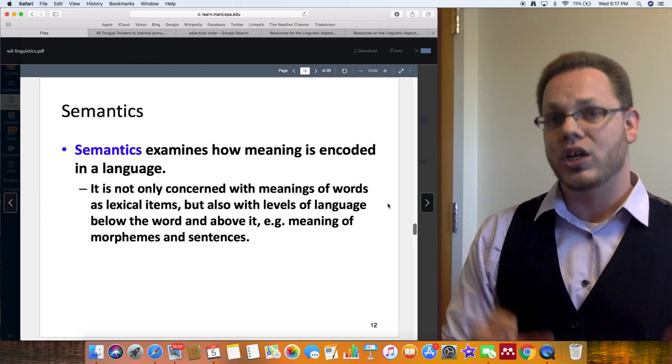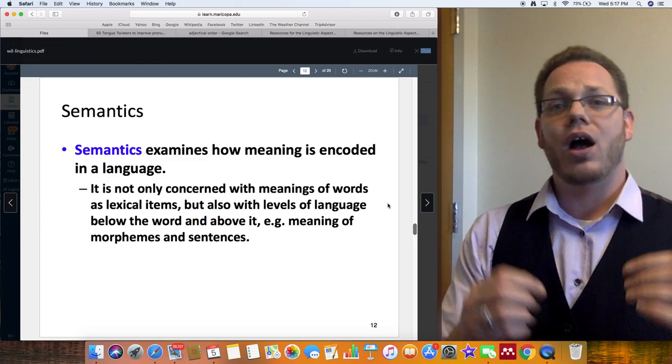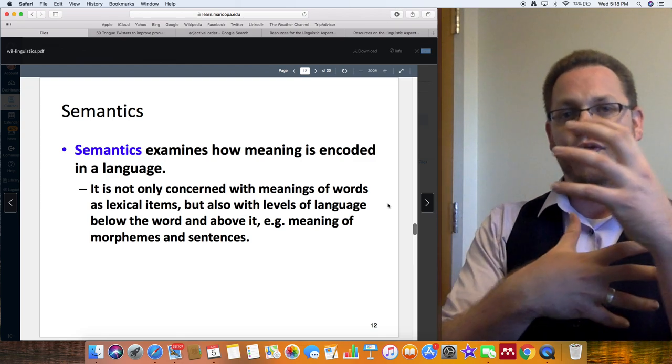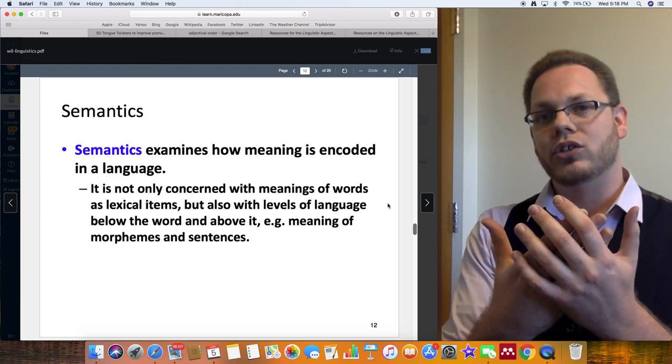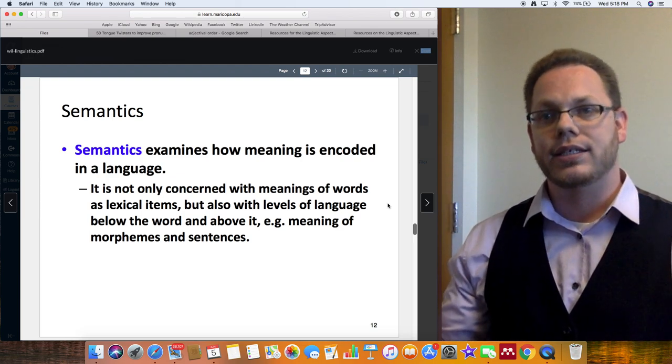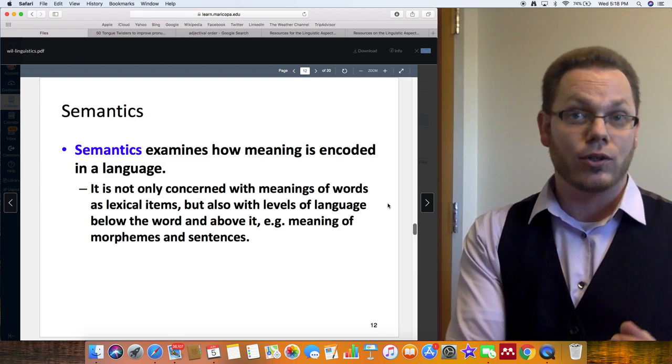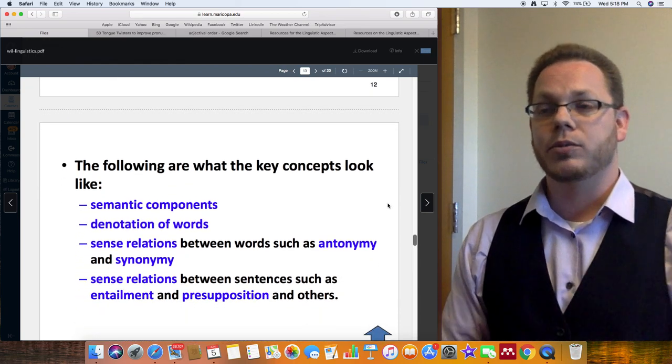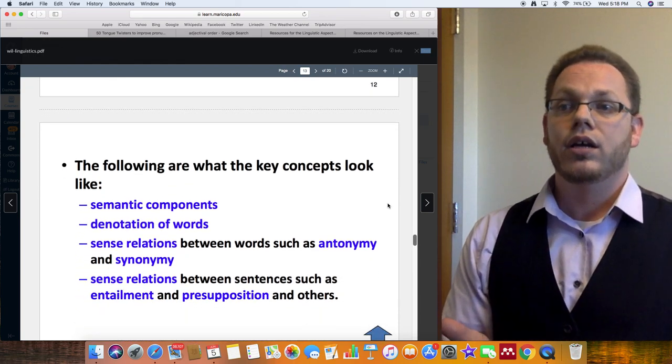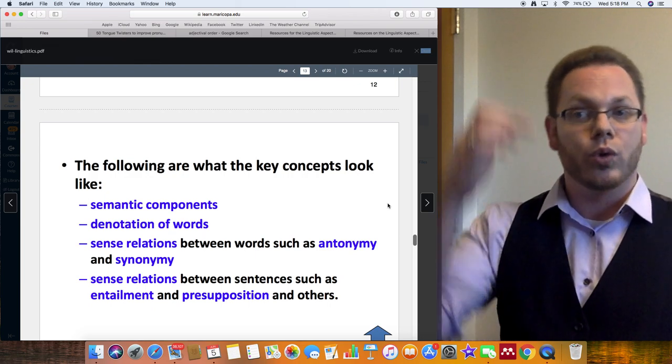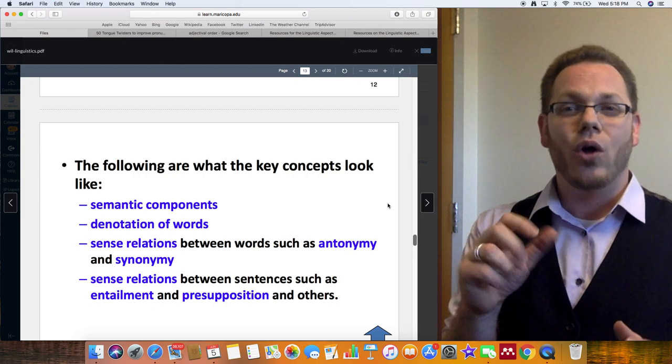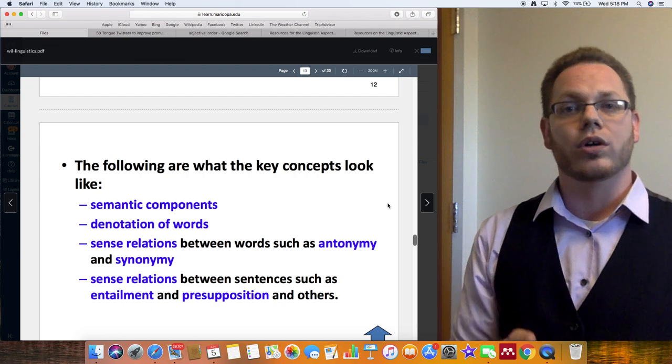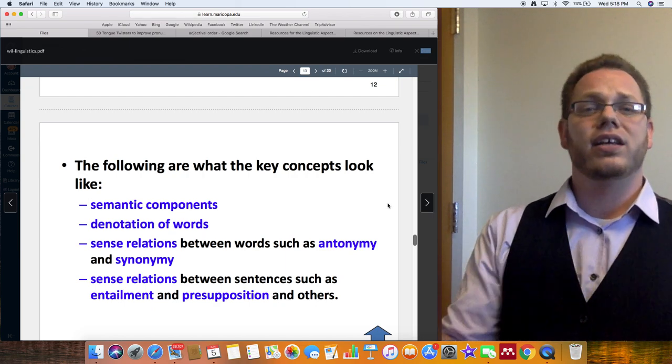And so with semantics and pragmatics, semantics is directly linked to context. It examines how meaning is encoded in the language and it's not only concerned with the meaning of the individual words, but the levels of language. So we get things like denotation, connotation, and this idea of webs of meaning and how the words around this one word or the words around these phrases, how that web of language and that larger context can influence how readers or how speakers interpret words. And so some key concepts when we're thinking about semantics, denotation, connotation, sense relationships between words, like antonym, synonyms.